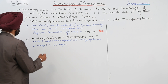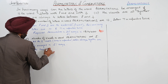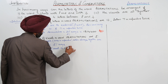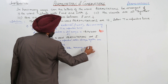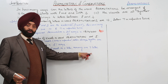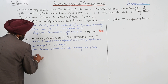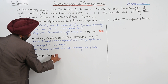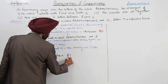Considering the 5 vowels as 1 letter, the remaining are 7 letters, making a total of 8 units. And in those 8 units, T is repeated twice. So the required permutation is equal to 8 factorial upon 2 factorial, multiplied by 5 factorial.